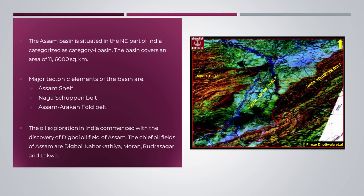The Assam Basin is situated in the northeastern part of India. The basin covers an area of 1,16,000 square kilometers. Major tectonic elements of the basin are the Assam Shelf, Naga-Shapan Belt, and Assam-Arakan Fold Belt. Oil exploration in India commenced with the discovery of Digboy Oil Field of Assam.